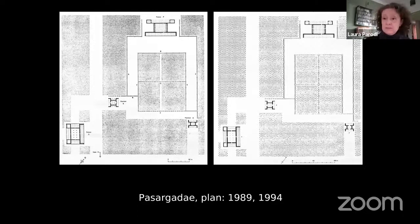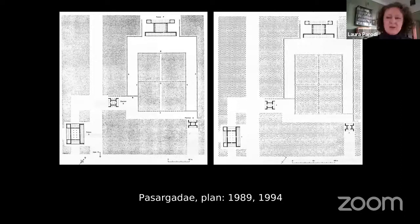Incidentally, those channels at Pasargadae are not quite like channels in Mughal gardens — if you look carefully, there are pools at regular intervals, which I believe are actually pits for planting trees. So these would have been rows of trees or hedges, not channels at all.